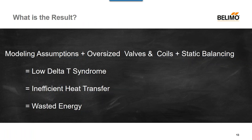What is the result of these actions? Modeling assumptions lead to oversized valves and coils. We have static balancing. All of these together result in low Delta T syndrome — overflowing coils and inefficient heat transfer. We're not utilizing the heat transfer because we're passing water through those coils too quickly. In essence, we're wasting energy and contributing to a larger carbon footprint.